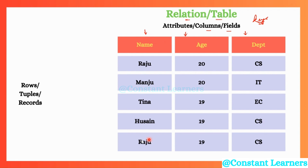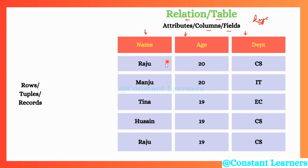This entire table here is a relation. The vertical columns are known as attributes or fields. And these horizontal sections — each single row — is known as tuples or records. Each row stores data about one entry. So this entire row is going to store data about one person, and then the next row will store data about another single person.